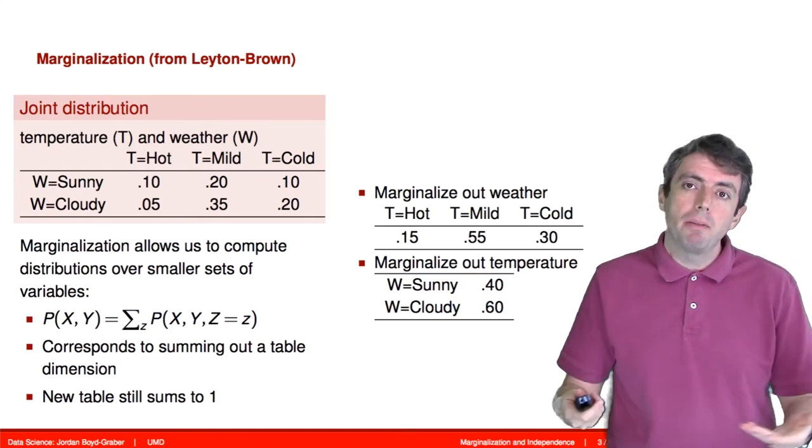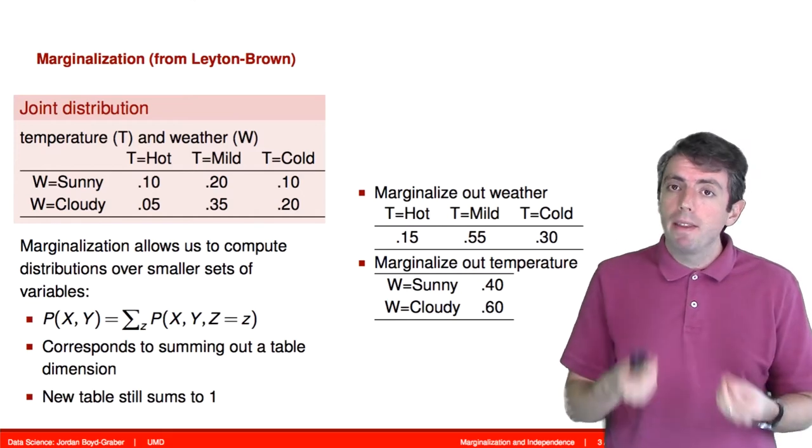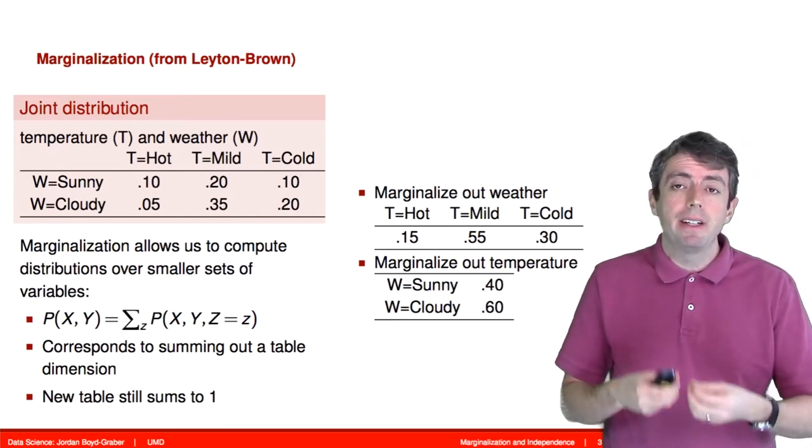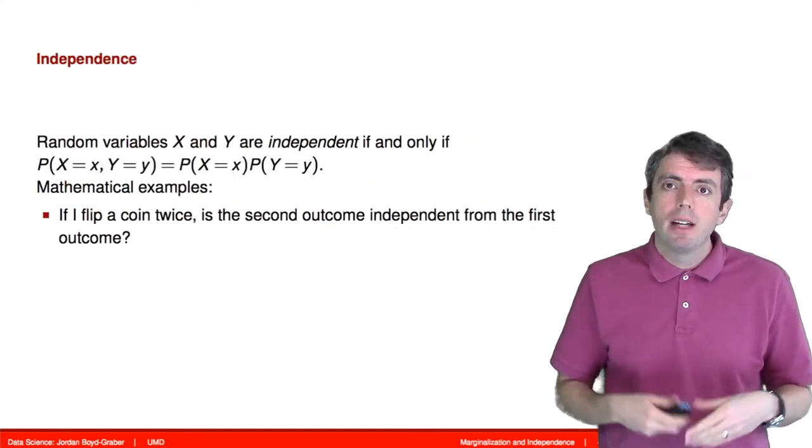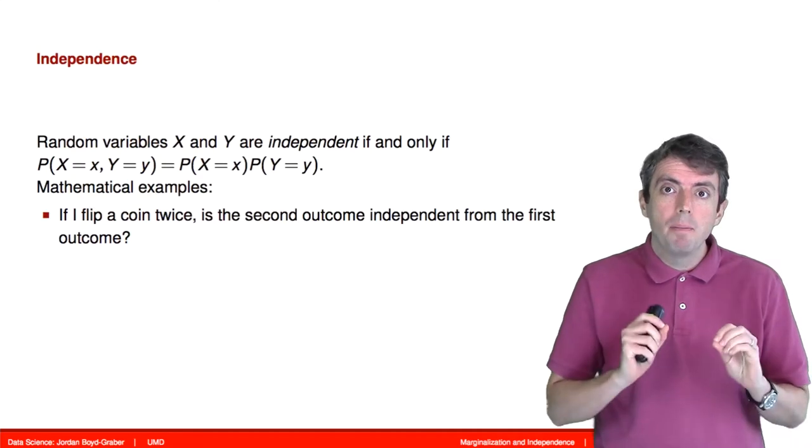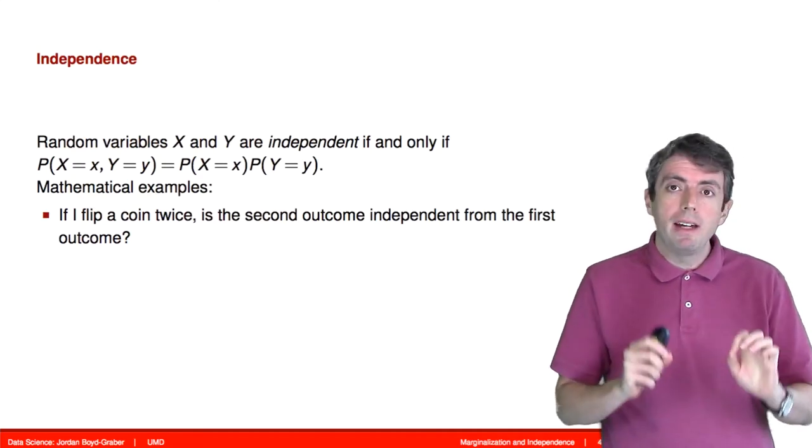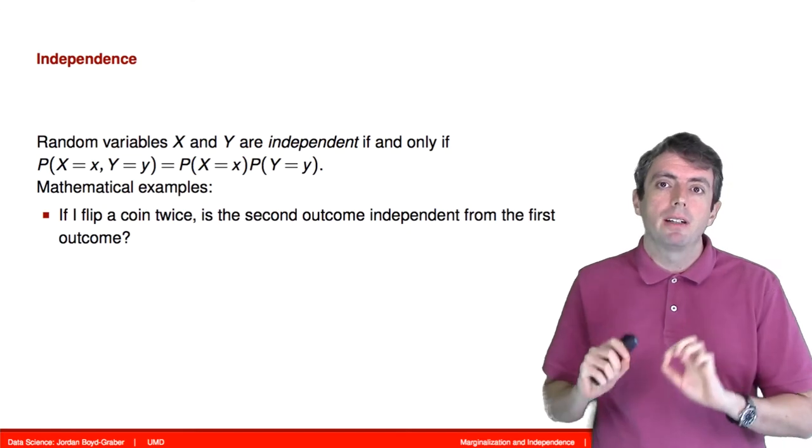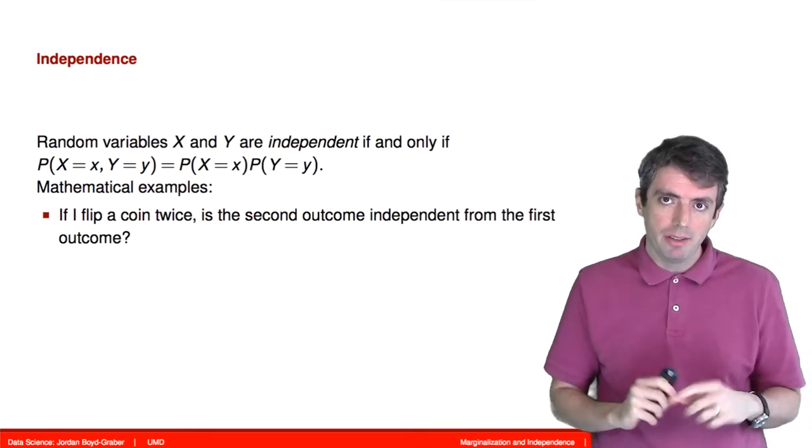But when we talk about joint probability distributions, one thing that we will talk about very often is whether they are independent or not. So independent in terms of distributions means that you can write the joint distribution as the product of the two marginal distributions.